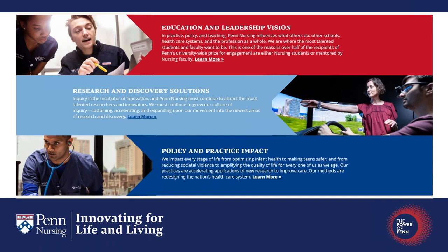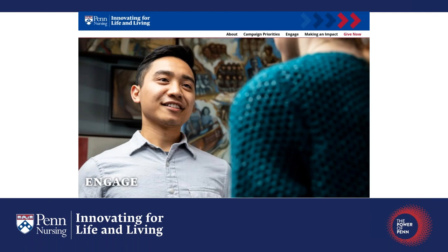We have three major components of the campaign that build upon our strategic vision for the school. The first is education and leadership — building vision. Next is research and discovery — solutions. And the last one is policy and practice — impact. In each of these areas, we're looking to the future and seeking funds to support our students, faculty, and to build an infrastructure critical to move us forward. I feel an even greater urgency to get these priorities funded over the next three years. This campaign matters to me because it matters to our students, the faculty, and the alumni of this remarkable school. I'm asking our alumni and friends to join me in making this exciting vision a reality by supporting the campaign, by advocating with us, by volunteering, by connecting with us, by sharing your stories.